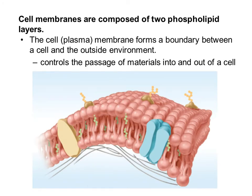Cell membranes are composed of two phospholipid layers, and for this reason they're often referred to as the phospholipid bilayer. The cell membrane, or the plasma membrane, is what forms a boundary between the cell and the extracellular environment, or the environment outside the cell. Because the cell membrane controls the passage of materials into and out of the cell, it's often referred to as the organelle that actually maintains homeostasis in the cell.